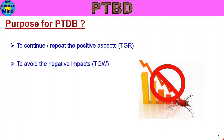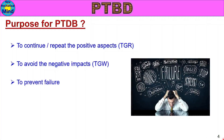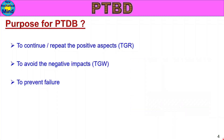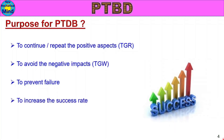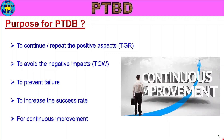The main purpose is to avoid the negative impacts — TGW, Things Gone Wrong — and how not to repeat them. The Past Trouble Database is used to prevent failure and increase the success rate, leading to continuous improvement.